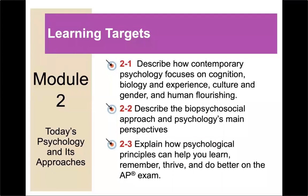Our learning targets for Module 2 are to be able to describe how contemporary psychology focuses on cognition, biology and experience, culture and gender, and human flourishing. Also to understand the biopsychosocial approach, which is very important as we move forward. And to be able to explain how psychological principles can help you within this class, all your classes, and in studying for the AP psychology exam.